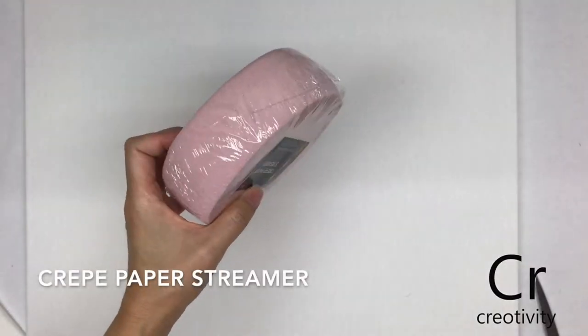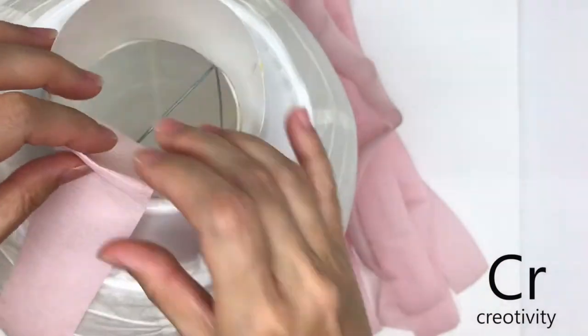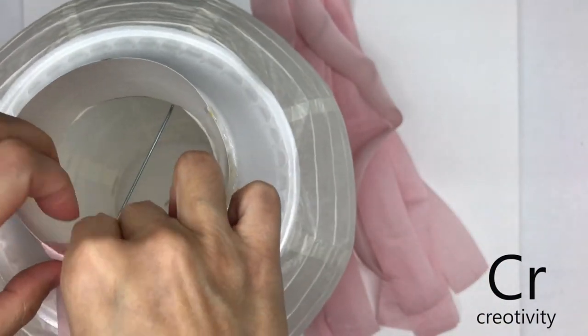Using crepe paper streamers, cut out 17 inch strips. Our hot air balloon is 15 inches in length, and this extra allowance will allow us to glue it on both ends. As you're adding each new strip, you can overlap them to cover the white.